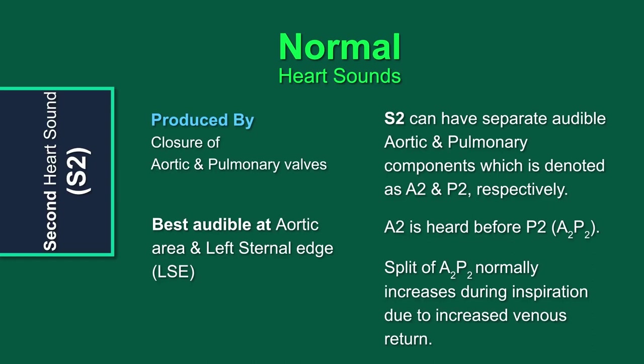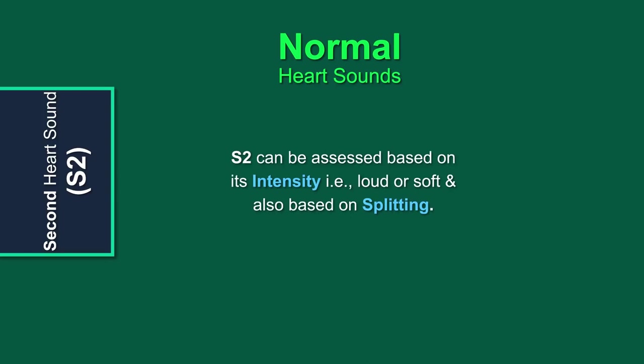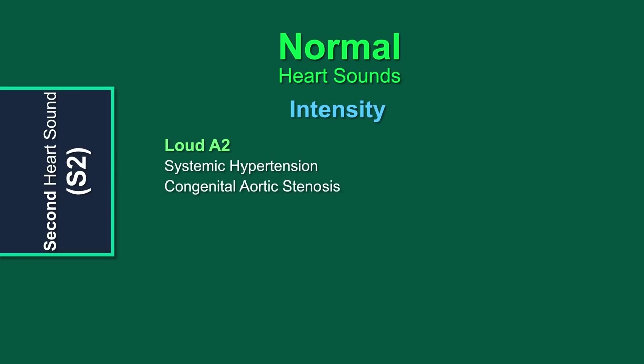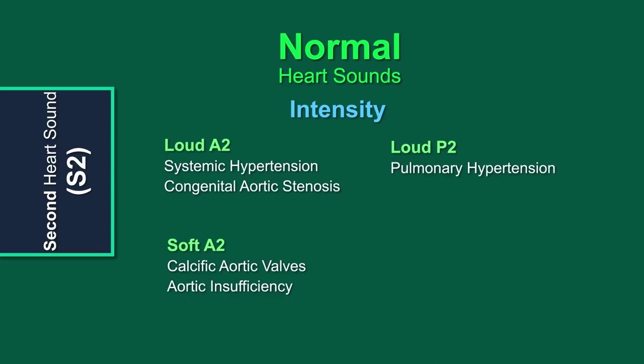S2 is an important heart sound and deserves more detail. S2 can be assessed based on its intensity and the nature of its splitting. In some abnormal conditions, the intensity of S2 can be either loud or soft. The aortic component A2 is loud in systemic hypertension and congenital aortic stenosis, while it becomes soft in calcified aortic stenosis and aortic regurgitation. The pulmonary component of S2 is louder in pulmonary hypertension. Soft P2 is not relevant clinically.